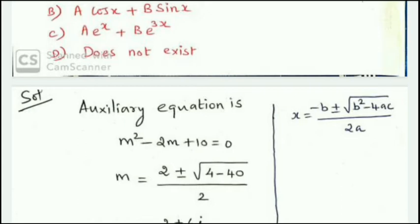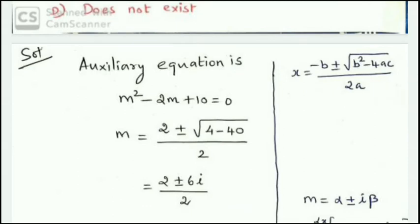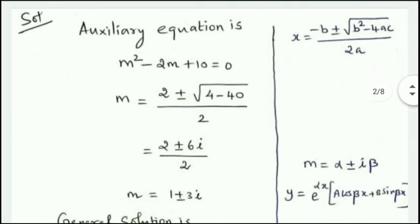Using the quadratic formula x = [-b ± √(b² - 4ac)] / 2a, with A = 1, B = -2, C = 10, we get m = [2 ± √(4 - 40)] / 2 = [2 ± √(-36)] / 2 = [2 ± 6i] / 2. So m = 1 ± 3i.